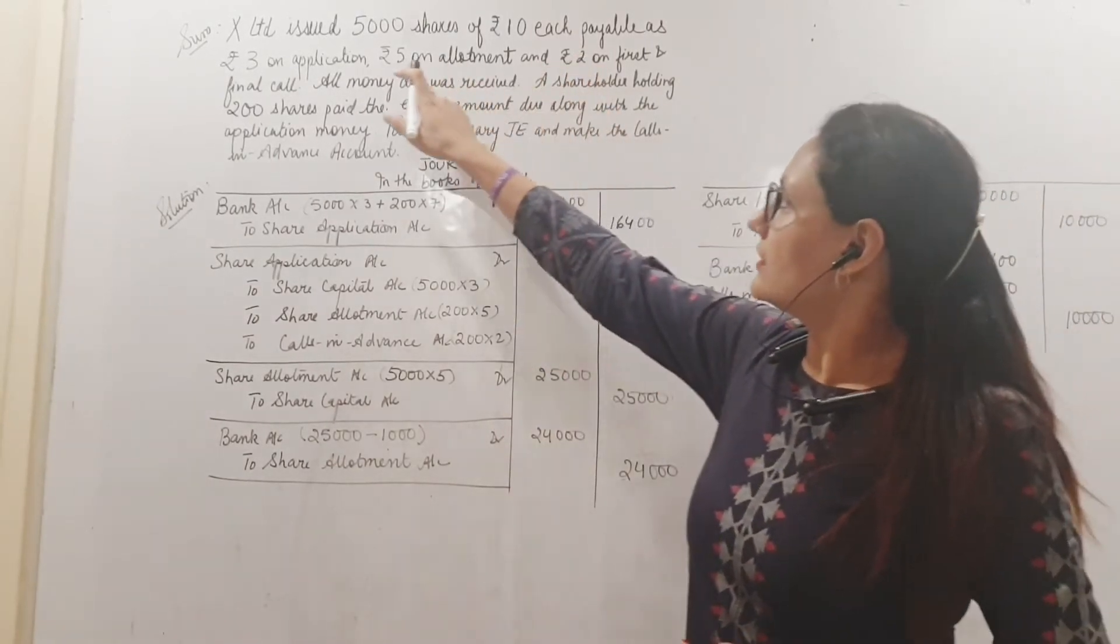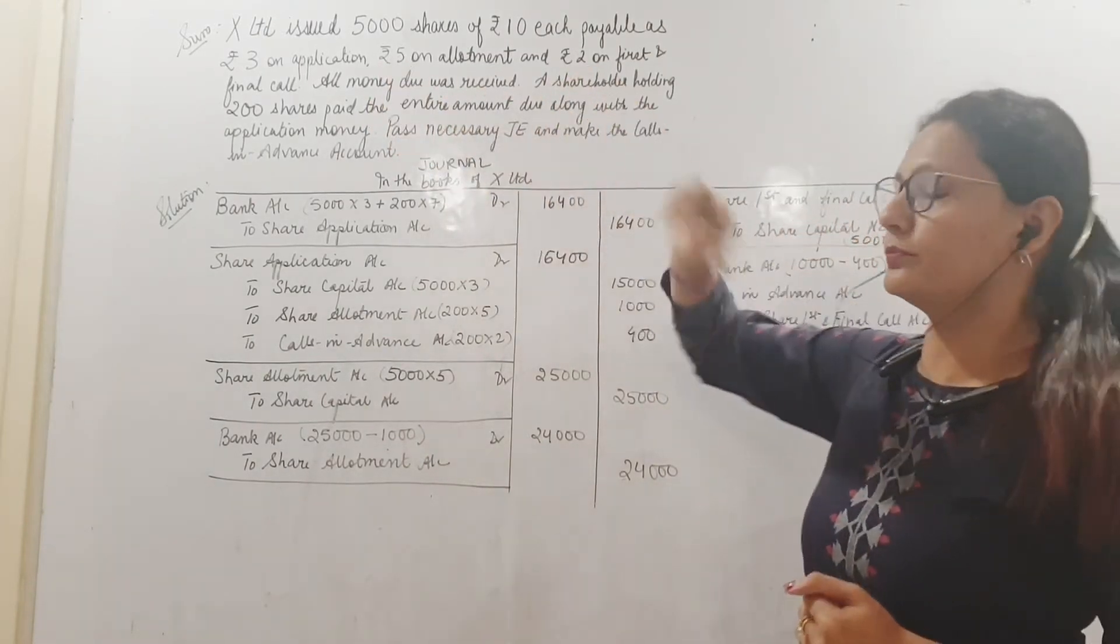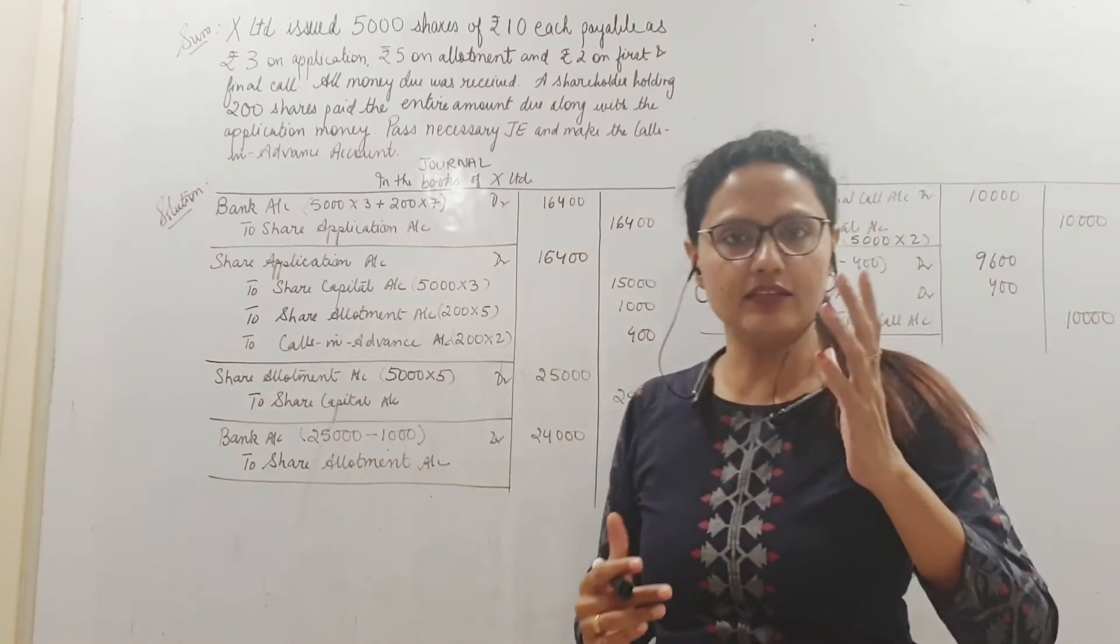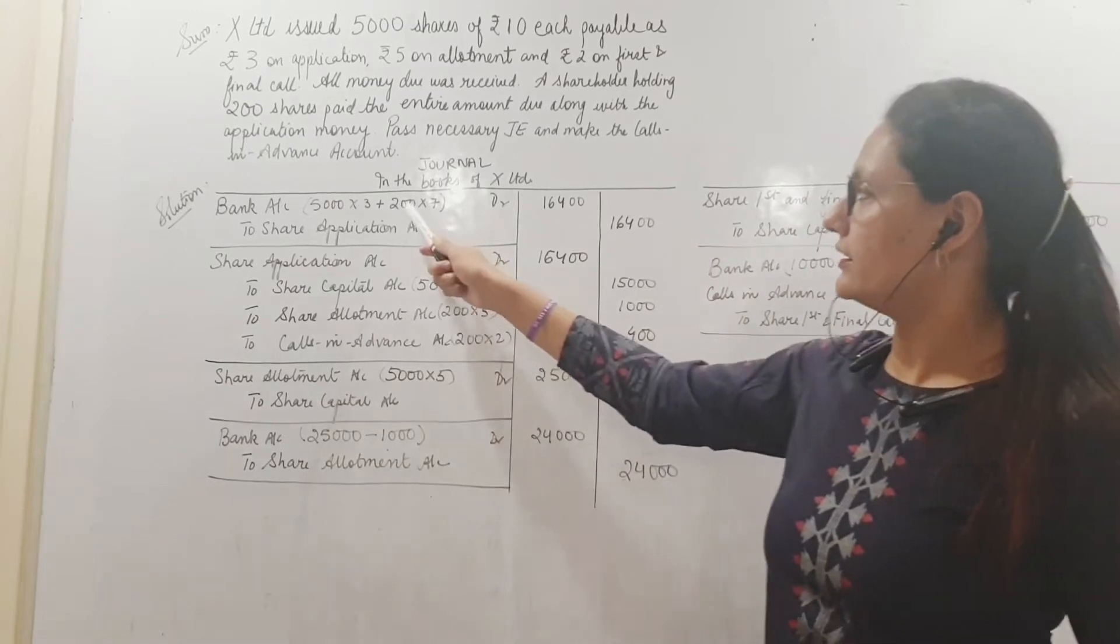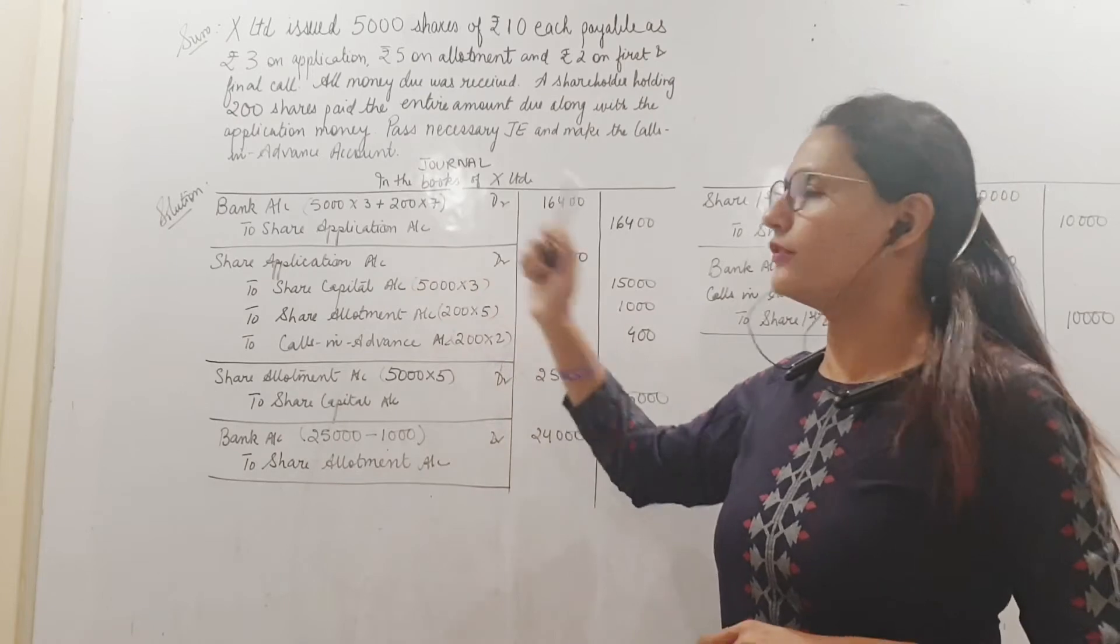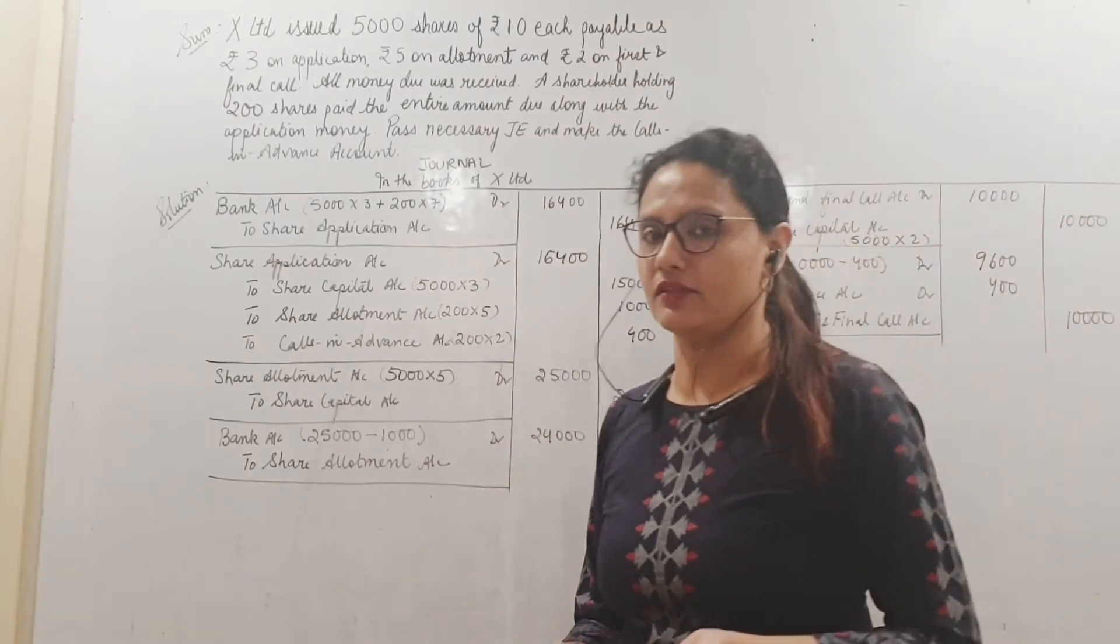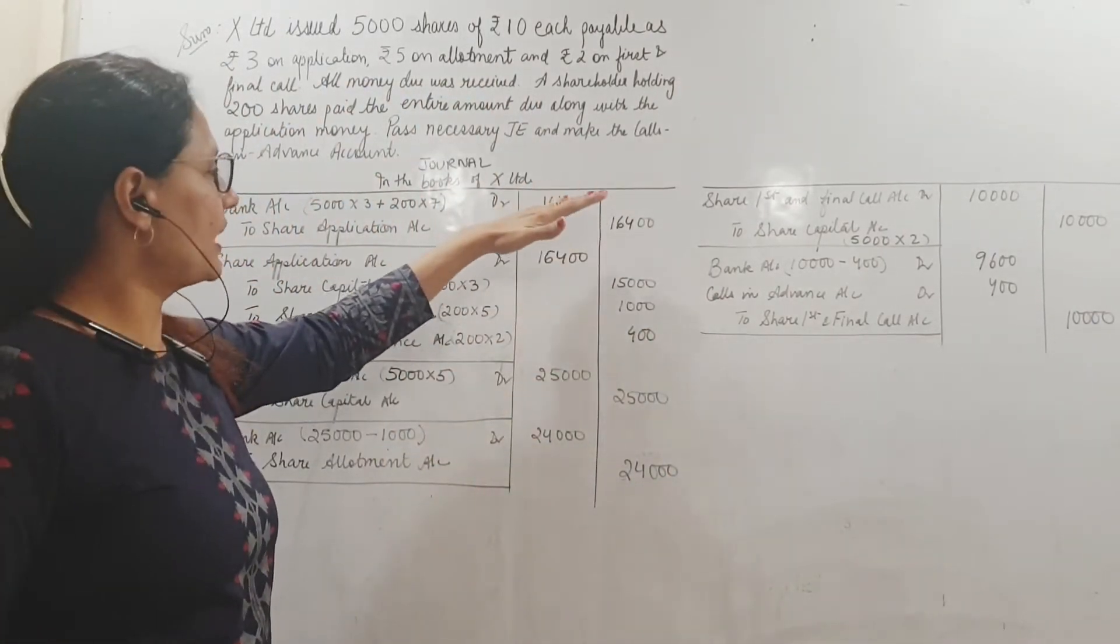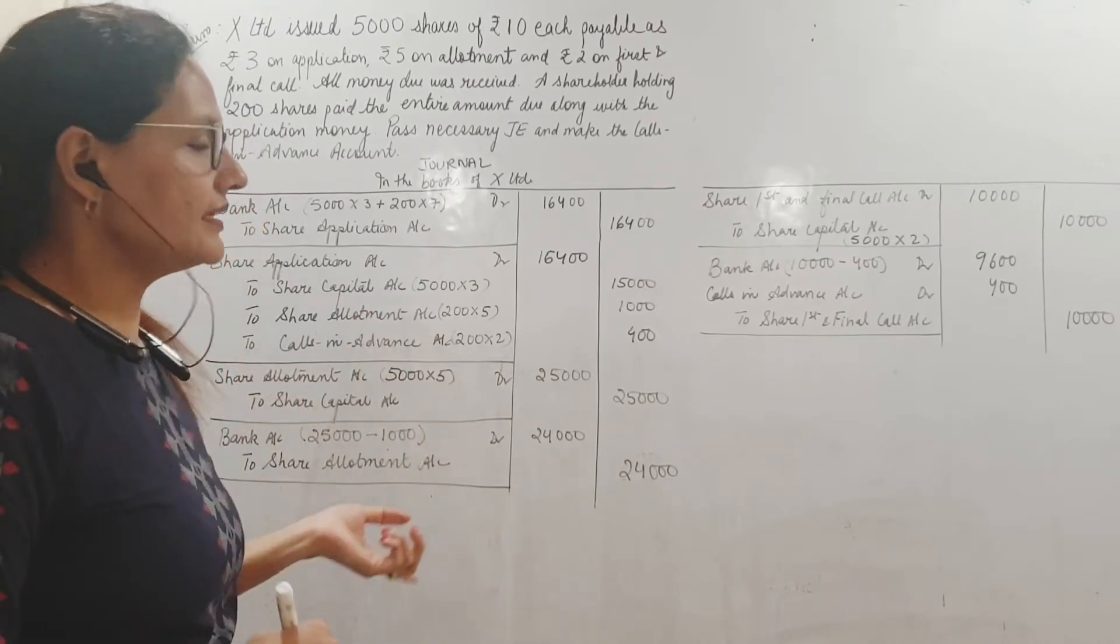How much is the amount due on allotment? 5 rupees per share. So 5 rupees he has also paid per share and 2 rupees he has also paid per share. Meaning total advance, how much has he paid? 7 rupees per share on 200 shares. So 200 into 7, that comes to 1400. So 15,000 plus 1400, that is 16,400.